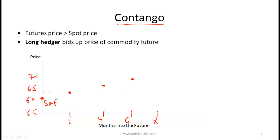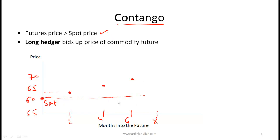Let's say we only have three futures contracts: one expires after 2 months and another after 4 months. Notice that the futures contracts are priced higher than the current spot price. When we have this situation where the futures price is higher than the current spot price, we have a situation called contango.